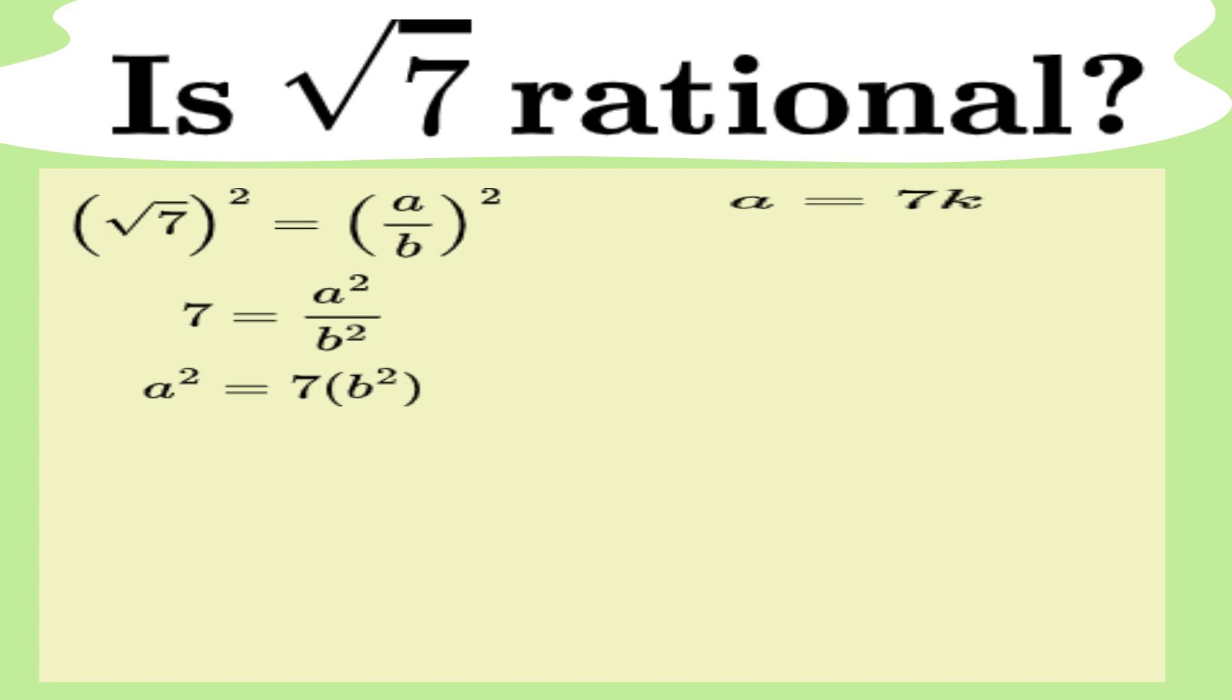Now, let's plug that back into our original equation. A squared equals 7b squared. If a equals 7k, then squaring both sides gives us a squared equals 7k squared, which becomes 49k squared. Now, our equation looks like 49k squared equals 7b squared.